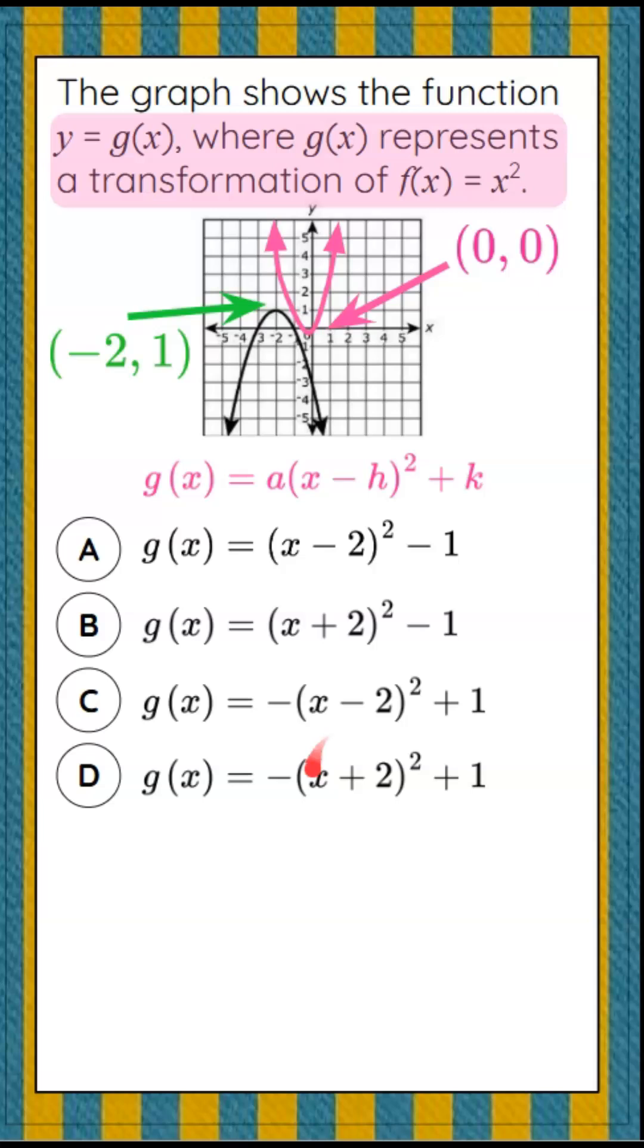I can see that each one of our answer choices, a through d, are written in what we call vertex form, where a tells us whether it was a reflected function from the parent function or a stretch or a shrink, and then h and k represent our vertex.